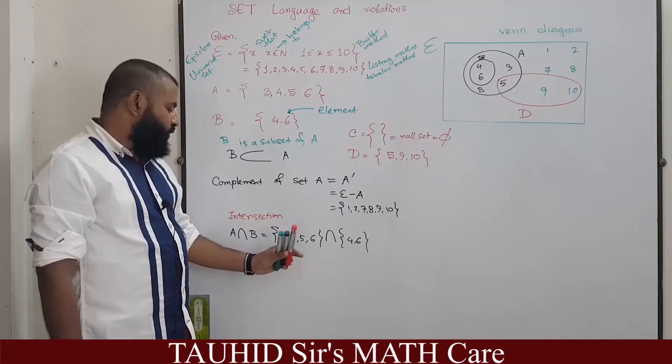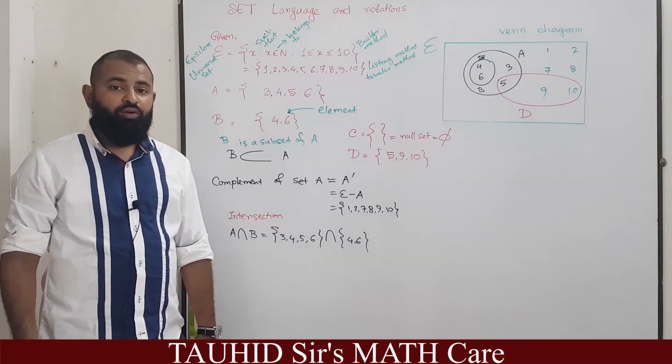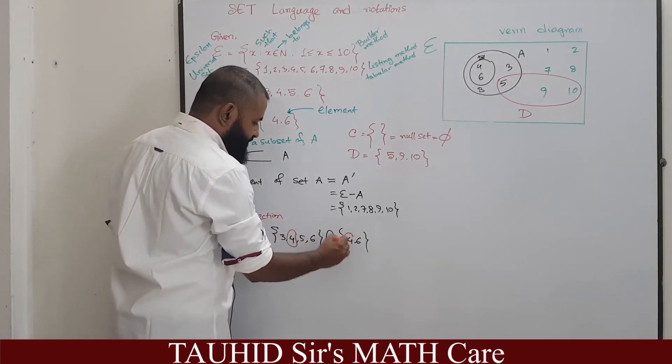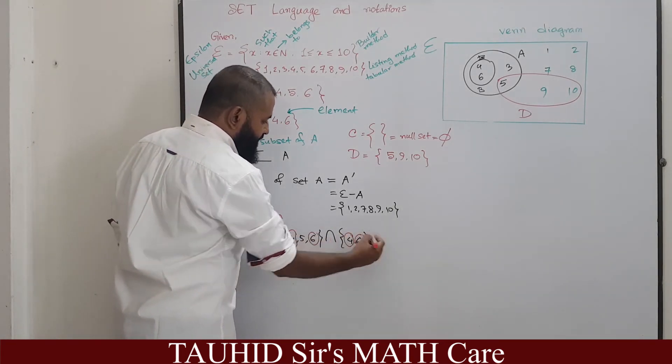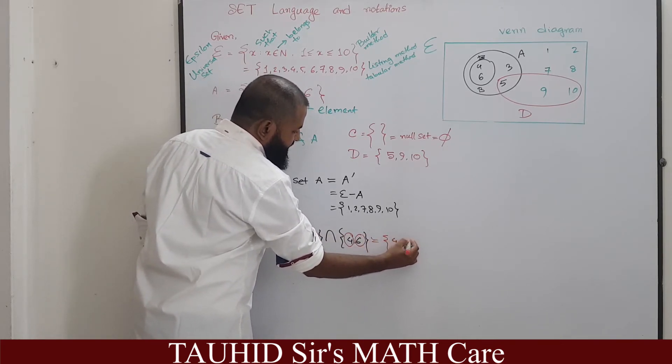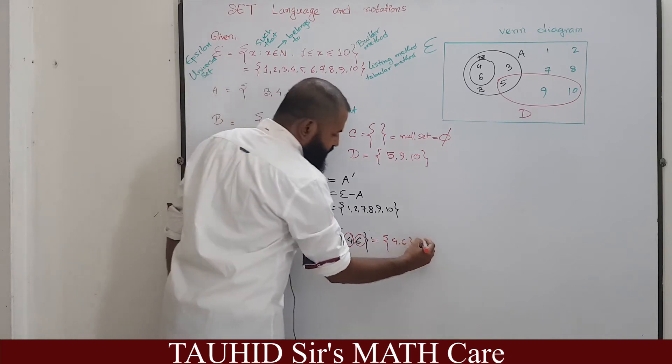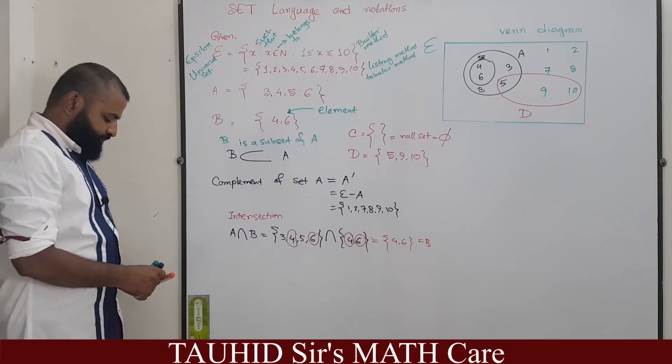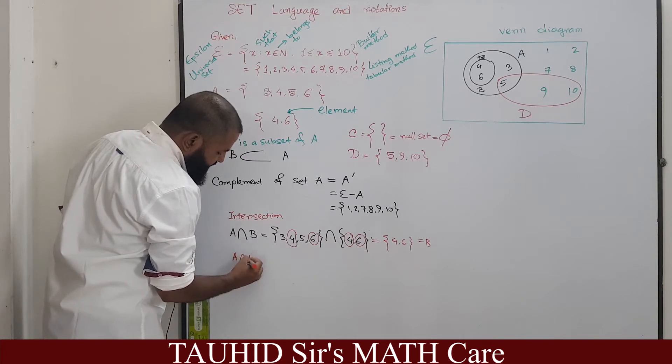That means the common portion, which elements are common for both A and B? They are 4 and 6. So A intersection B will be 4, 6 which will be equal to B.